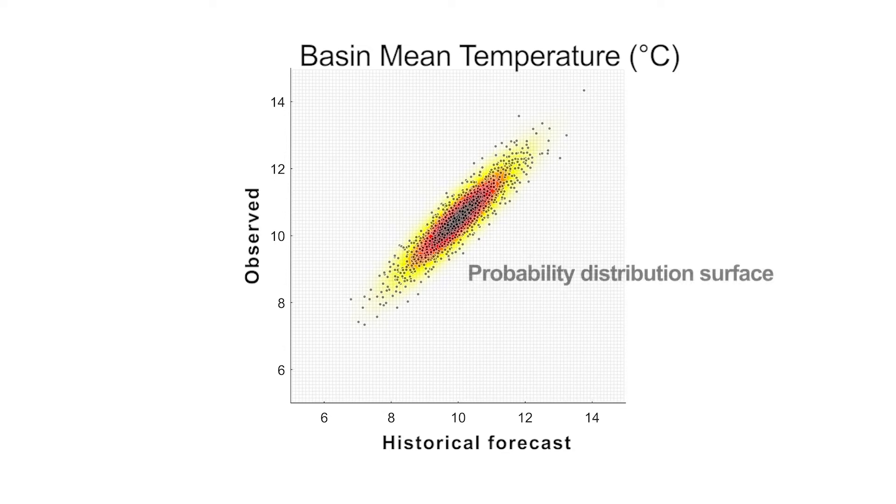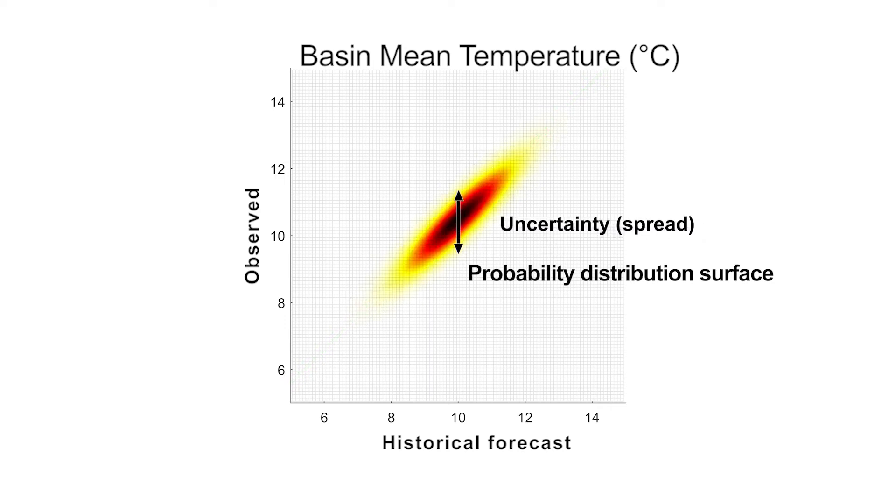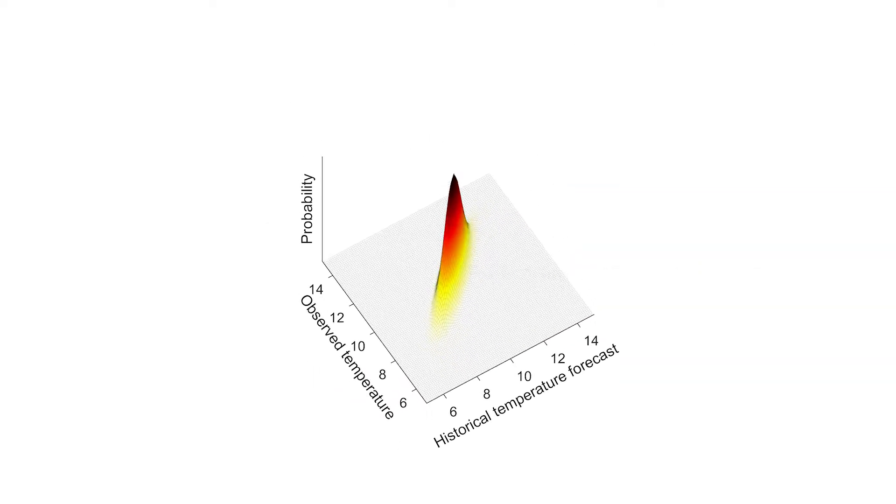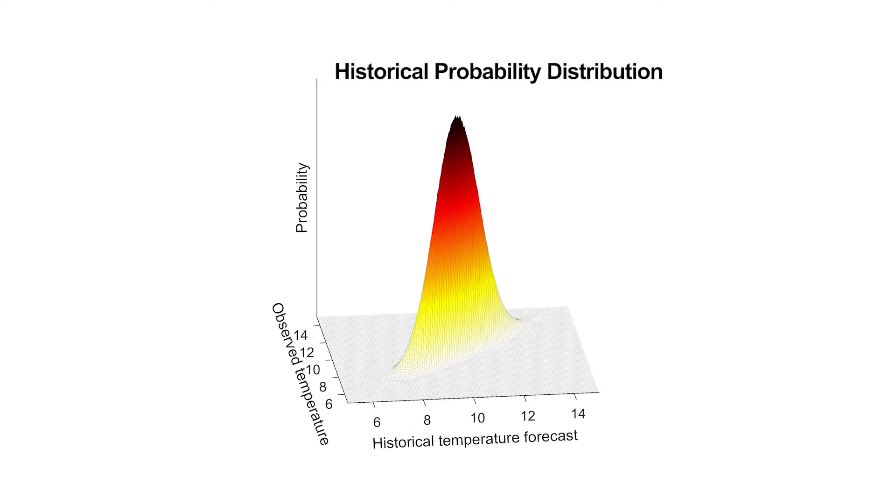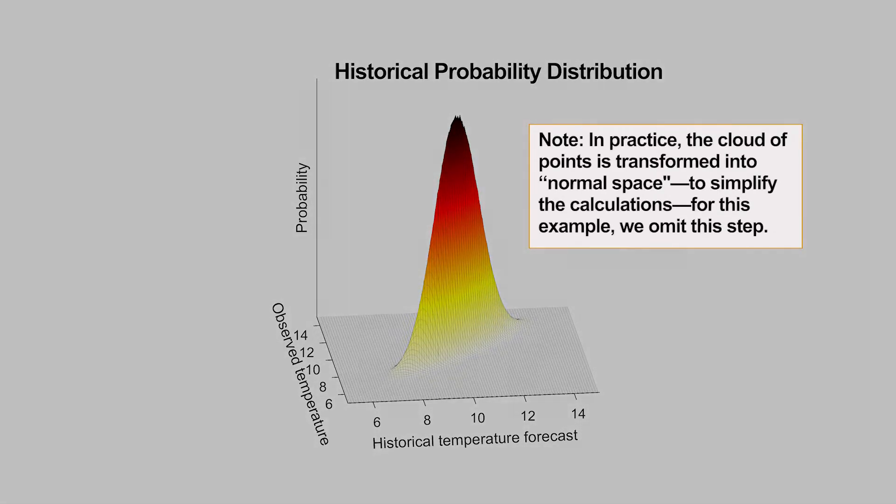The cloud can be modeled with a probability distribution surface which represents the bias and the uncertainty in the historical forecasts. This can be represented as a three-dimensional surface which will serve as the historical probability distribution. We'll use this in the next step to provide information on the past bias and uncertainty.